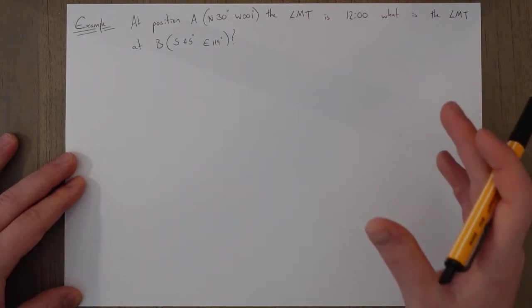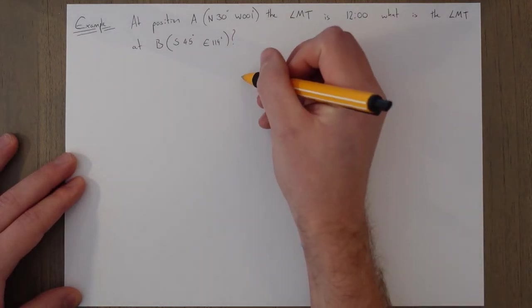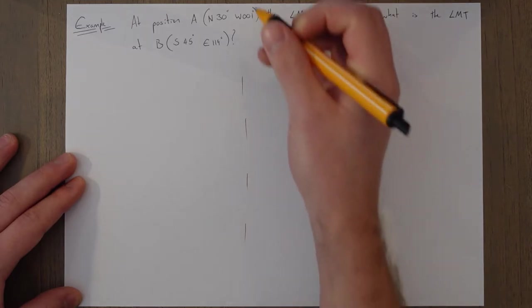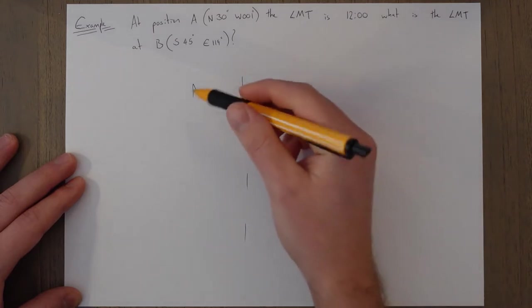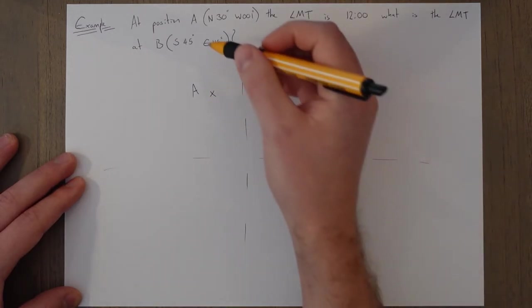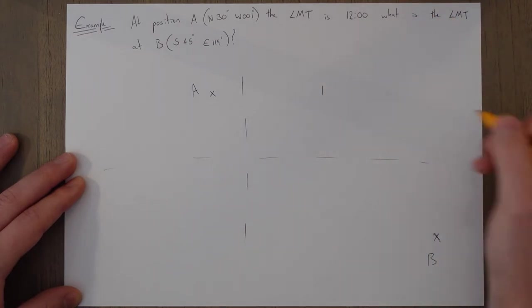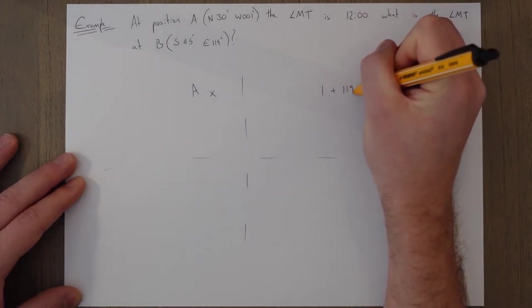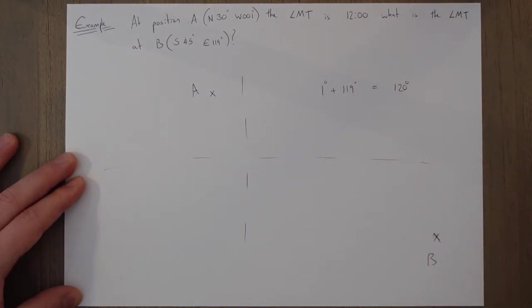So we draw the picture to get things orientated the right way. So we pass through the Greenwich meridian at some point, so I'll draw that on. And position A is at west 001, let's call it over here. And position B, south 45, we'll do a very rough diagram, south 45 and east 119, so it's all the way over here. Okay, so we're crossing over the Greenwich meridian, so we need to add the longitudes together. One degree west plus 119 degrees east equals 120 degrees of change in longitude.